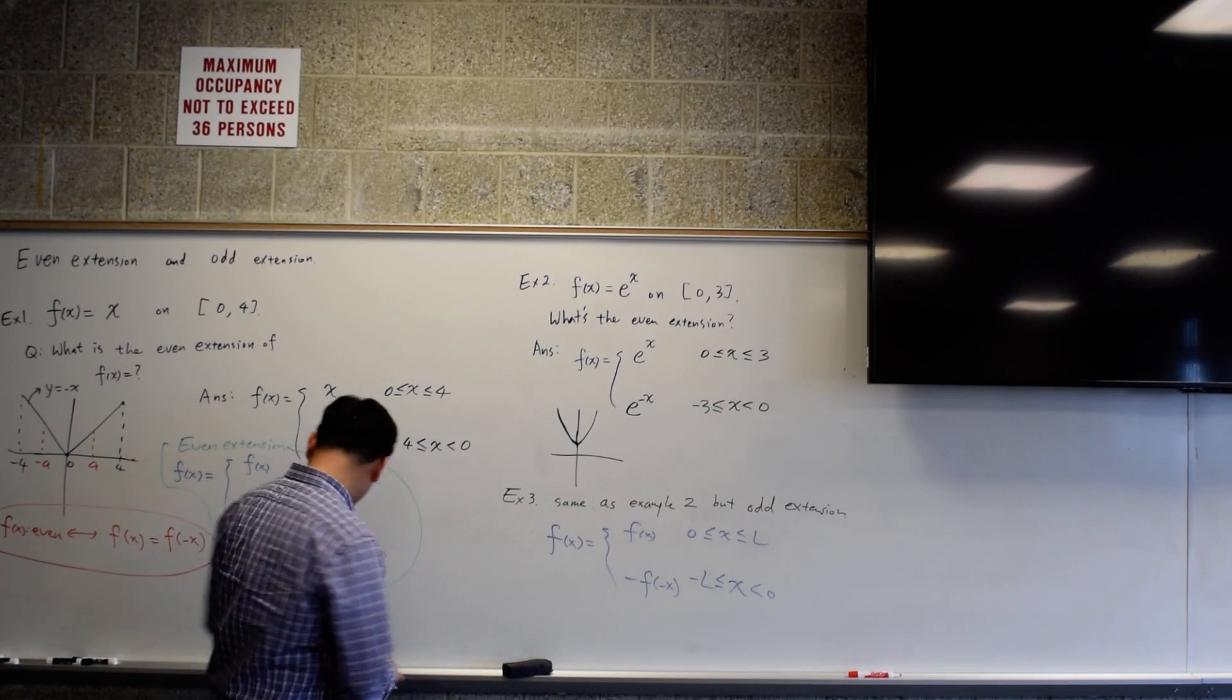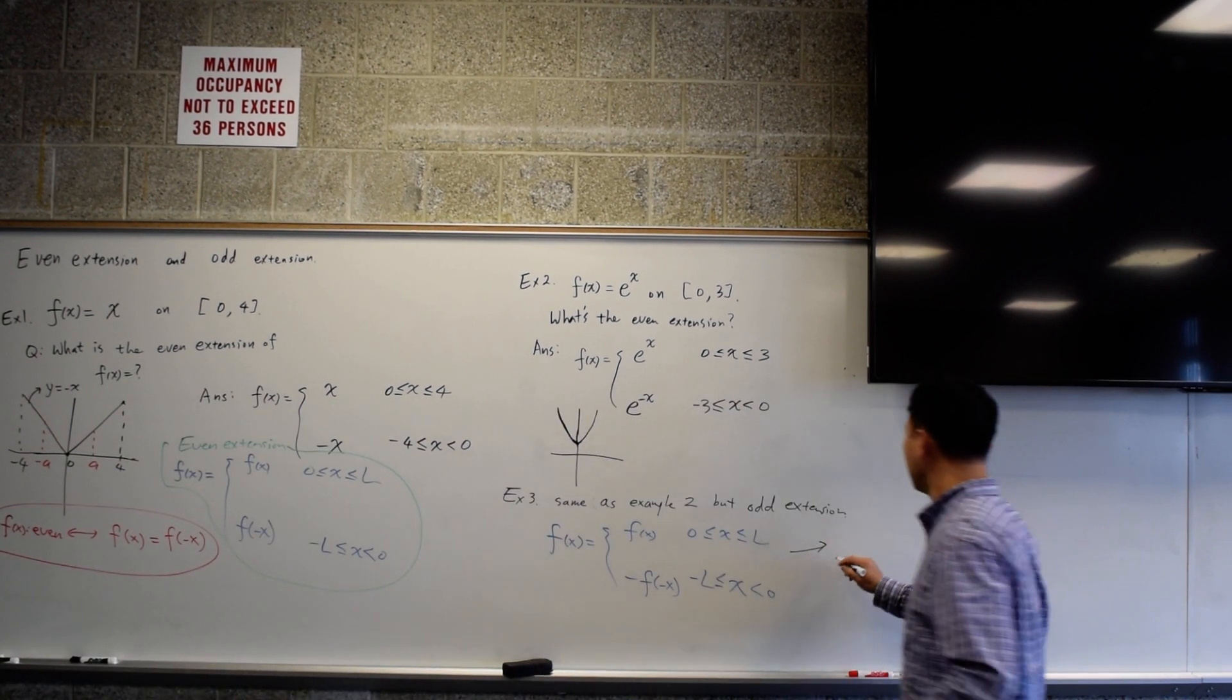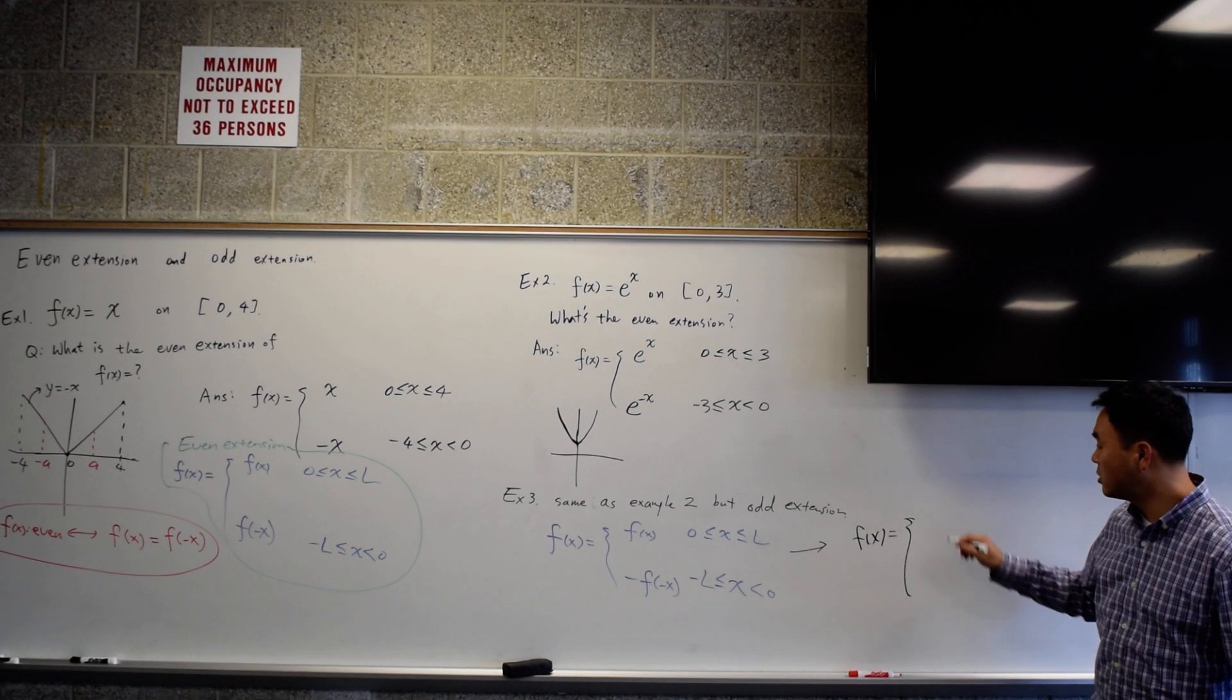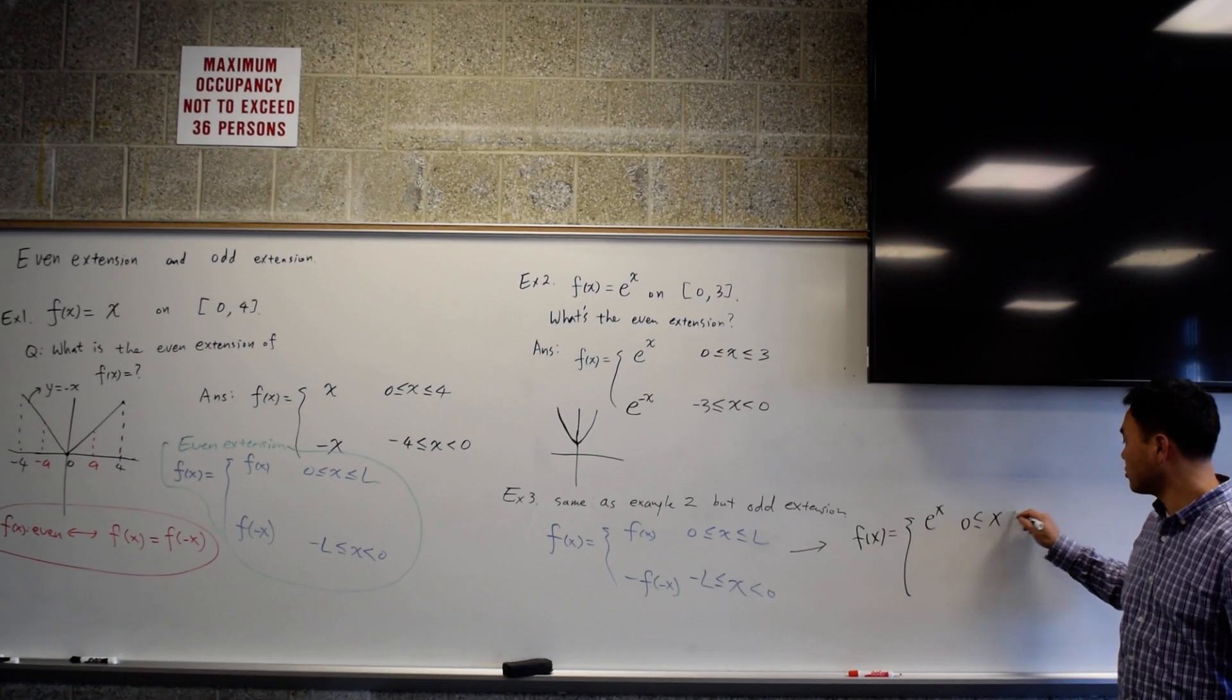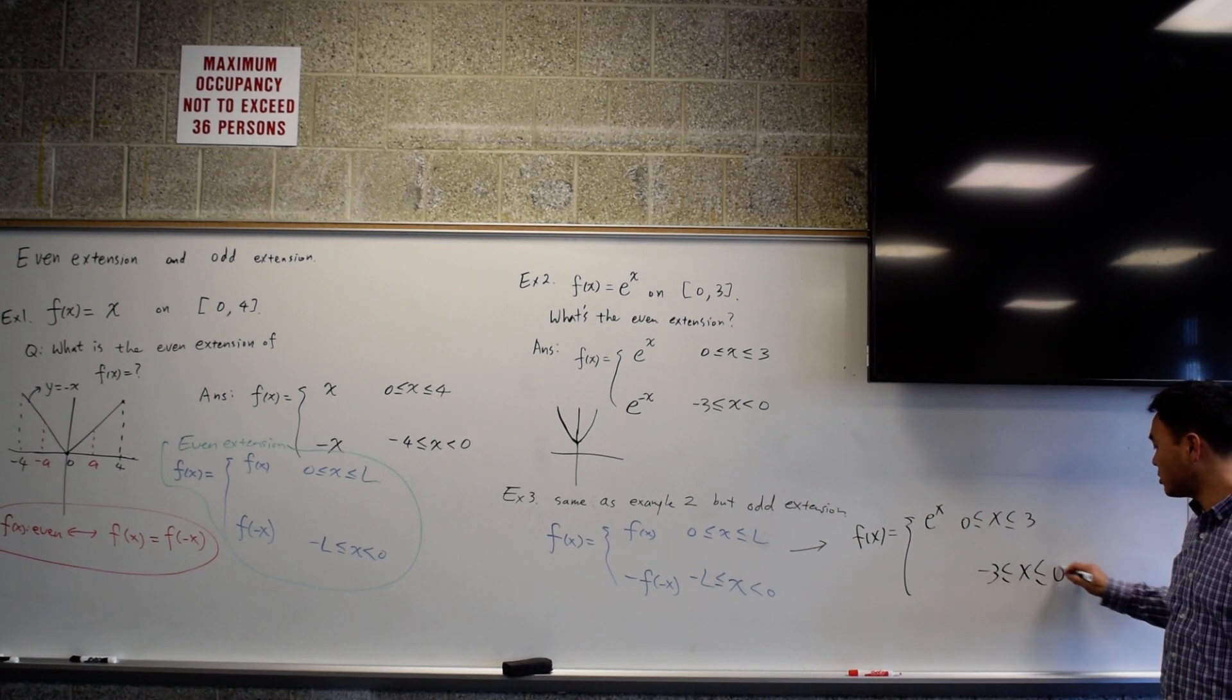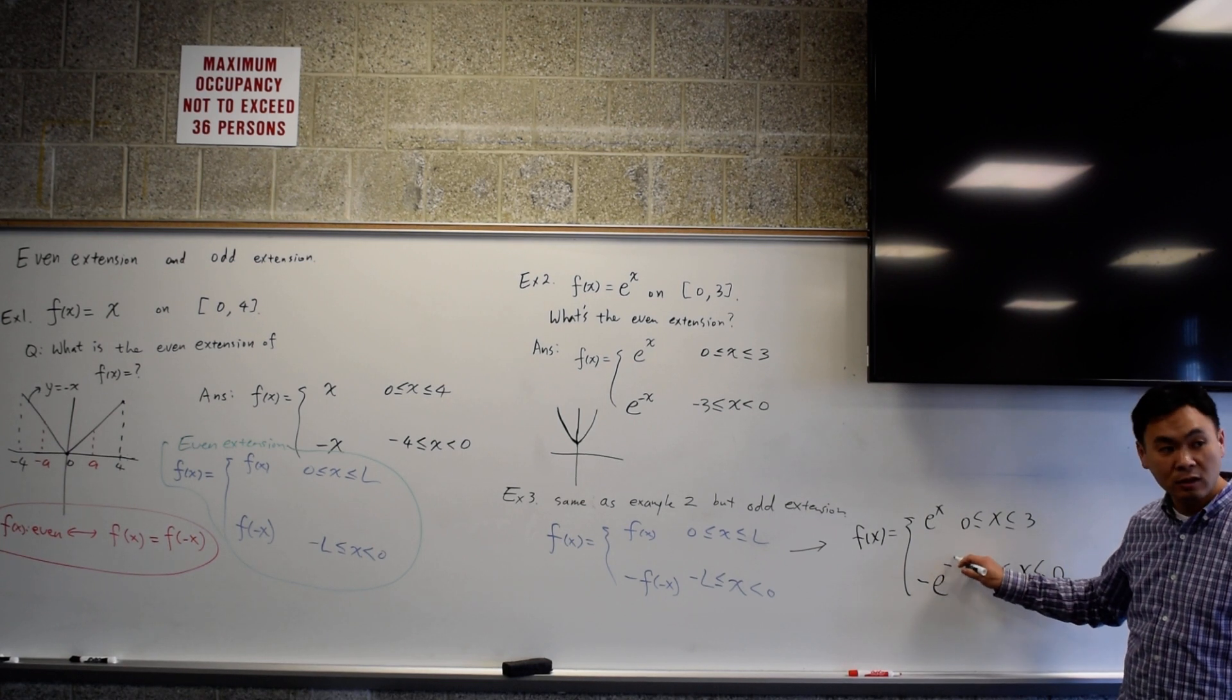So using this formula, what will be the answer? So for that above case, what's the odd extension? F of x equals to e to the x as before from zero to three. But if your x is between negative three to zero, what do you do? Negative e to the negative x.